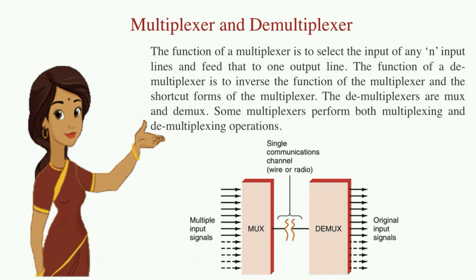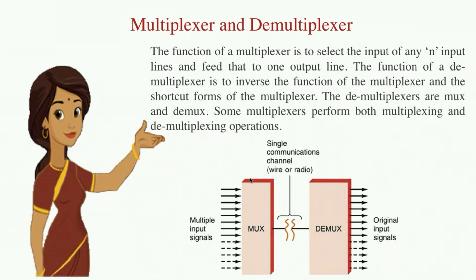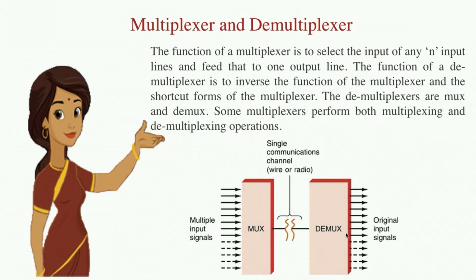First let us try to understand what a multiplexer and a demultiplexer is. The function of a multiplexer is to select any input of the n input lines that are fed, and out of these n input lines it selects any one input and provides it at the output. Which input is selected is based on select lines. The demultiplexer performs the inverse of this operation — there is one input fed to the demultiplexer and there are n output lines generated, and which output line carries the signal is based on the select lines.